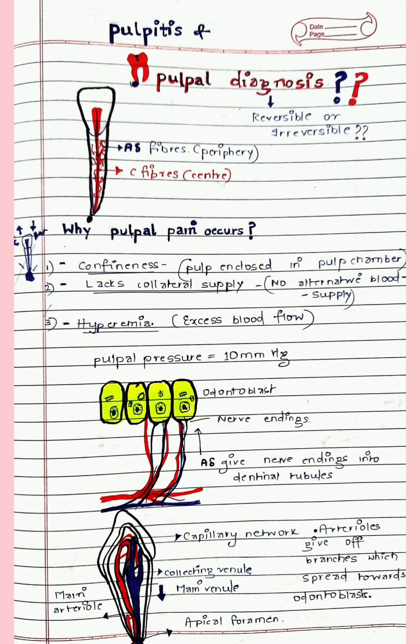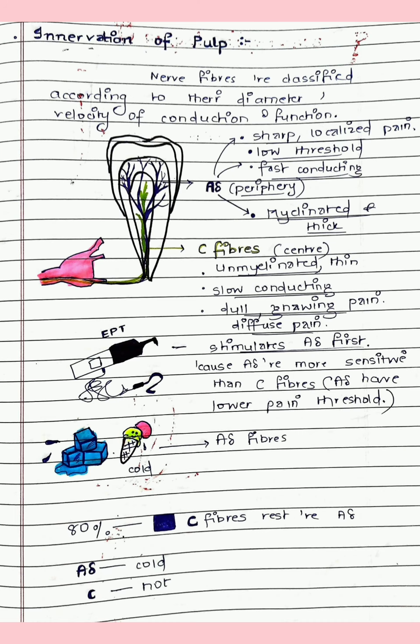The pulp is abundantly innervated by nerve fibers, classified according to diameter, velocity of conduction, and function. We are going to deal with the A-delta and C fibers. As seen in the picture, A-delta fibers are located at the periphery at the pulp-dentine junction, whereas C fibers are located in the center. A-delta fibers are responsible for sharp and localized pain — the pain is easily localized and you can point out the tooth that is aching.